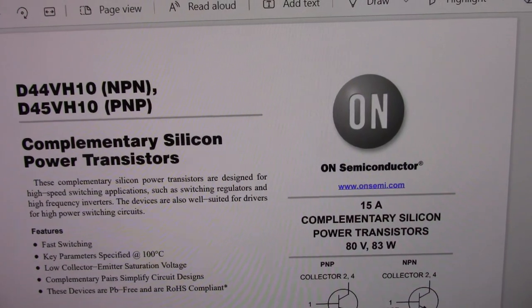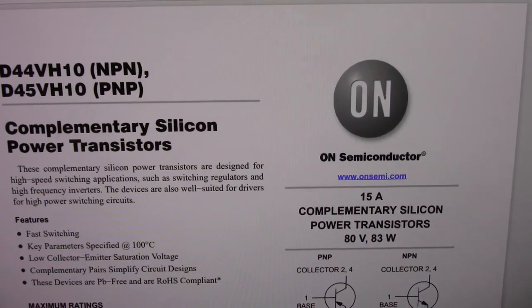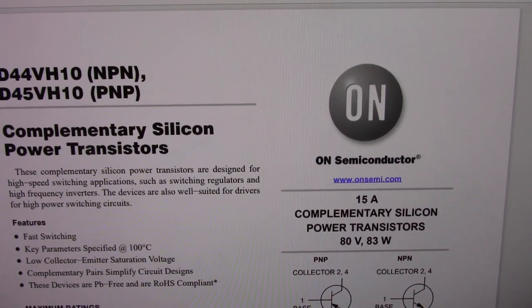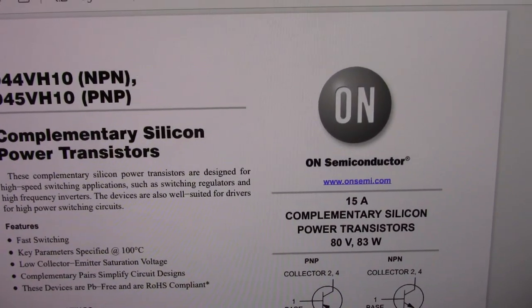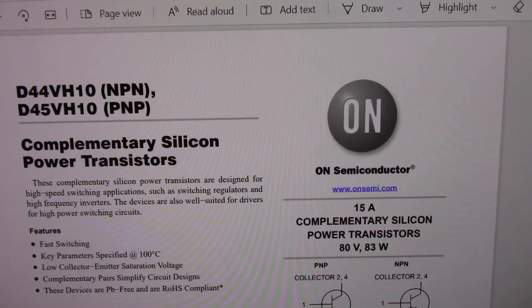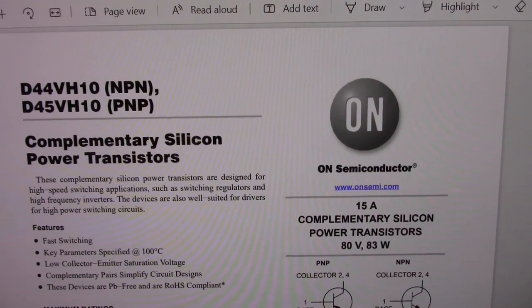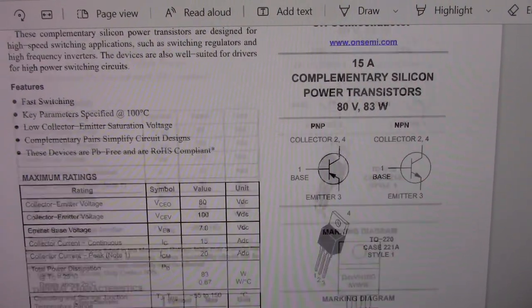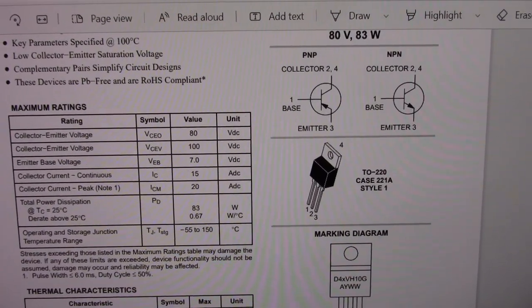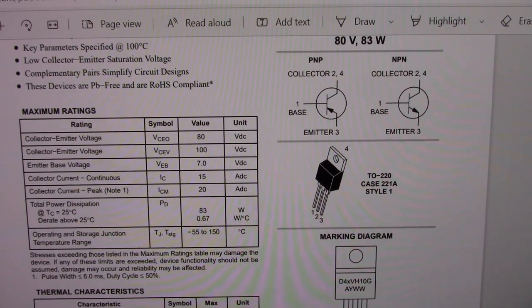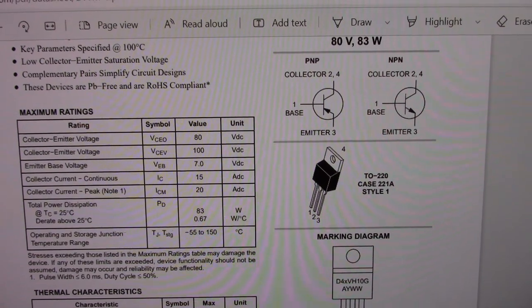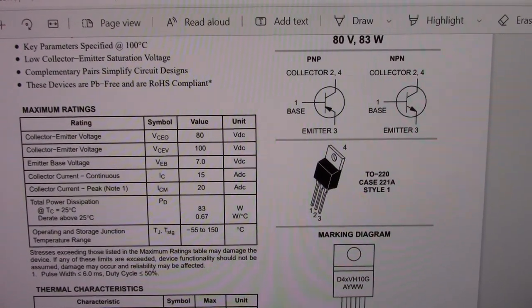If they so fit the application, they have a 15 amp collector current, 83 watts dissipation, which I always kind of question in a TO220 type case. 80 volts collector emitter. Not for real high power amplifiers. And we'll see here momentarily that they'll be limited a little more.